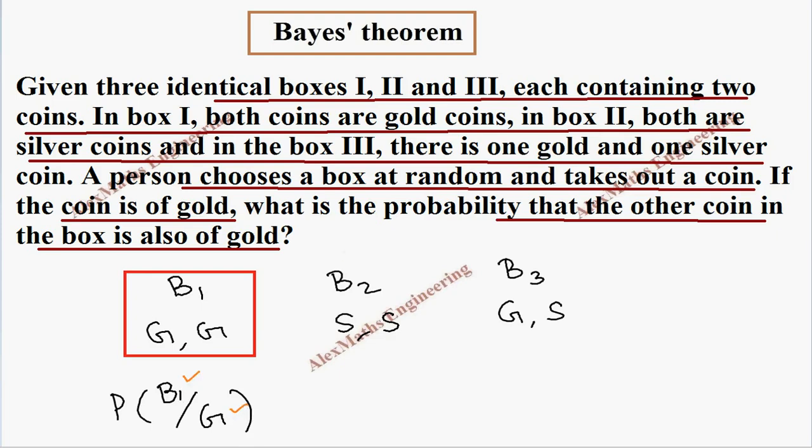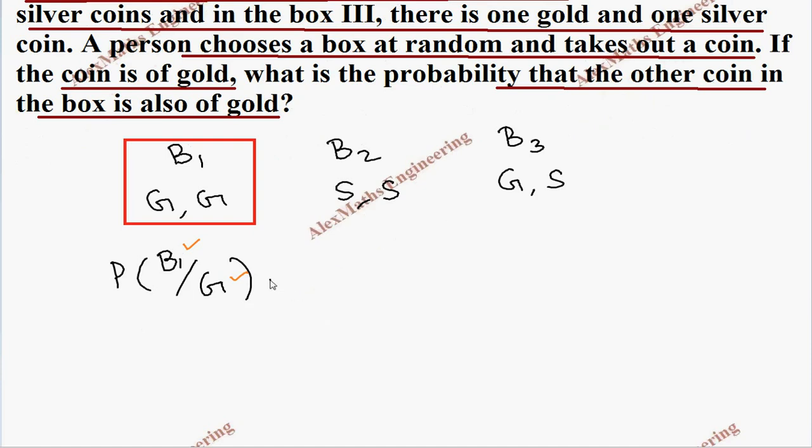So, we should know how to write this expression, what they are asking for. Then from this expression, we write the formula. There is a way to write the formula. First, we have to write the numerator part P of B1 into and we have to write the reciprocal which is P of G by B1.